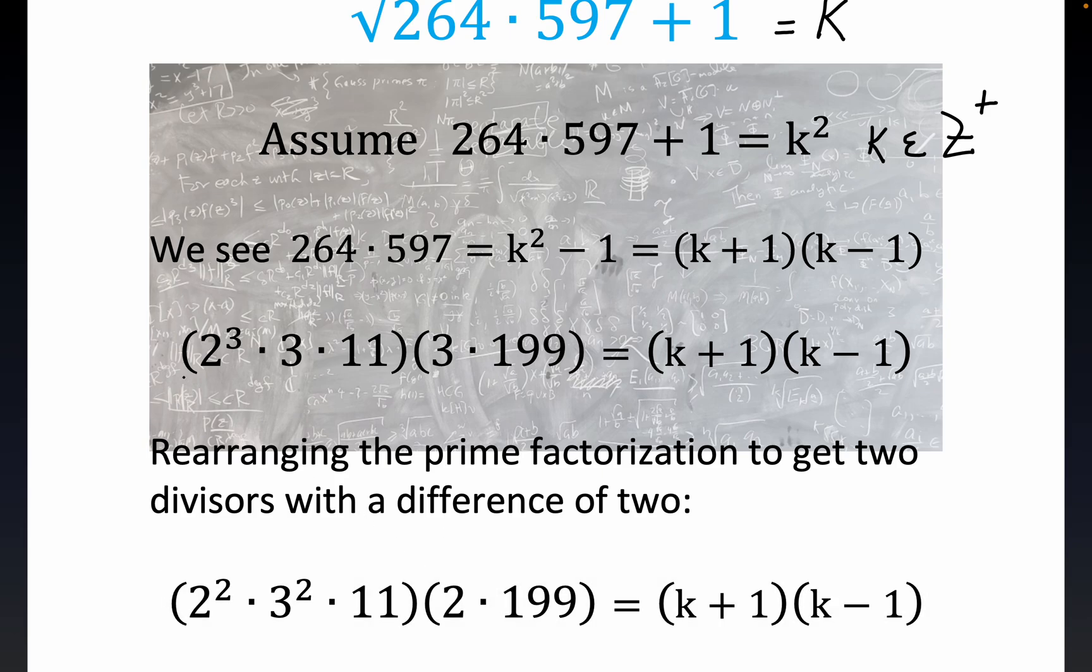You see how we change this 3 to a 2? We stole that 2 from this 2 cubed. That's why this is 2 squared. And then we took this 3 and put it back here to get 3 squared. And that's the only thing that's feasible, really. If you multiply 199 by anything else, it's much bigger, and you're going to have two numbers that are separated by much more than 2.